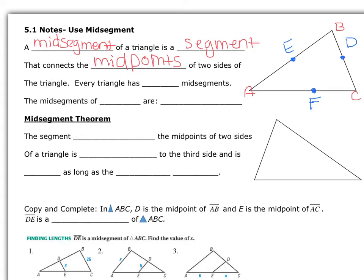The way you would know that those points are midpoints is if it told you that AE is congruent to EB, then E is the midpoint. If BD is congruent to DC, then D is your midpoint. Same thing with AF to FC. Now that you have all these midpoints, a mid-segment is a line that connects the midpoints. Every triangle has three mid-segments.